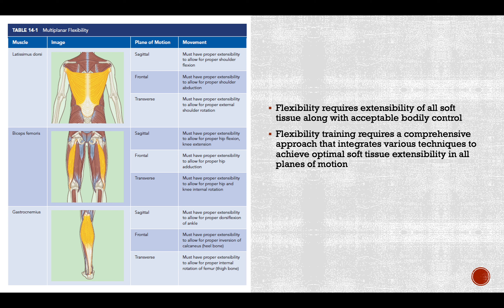Muscle groups are dictated by the amount of flexibility available. Without proper flexibility in specific muscles, we don't have proper body control. We need to apply specific techniques in the right manner to adjust extensibility in all planes of motion — sagittal, frontal, and transverse. Examples include the lats, biceps femoris, and gastrocnemius, which all have implications in all three planes.